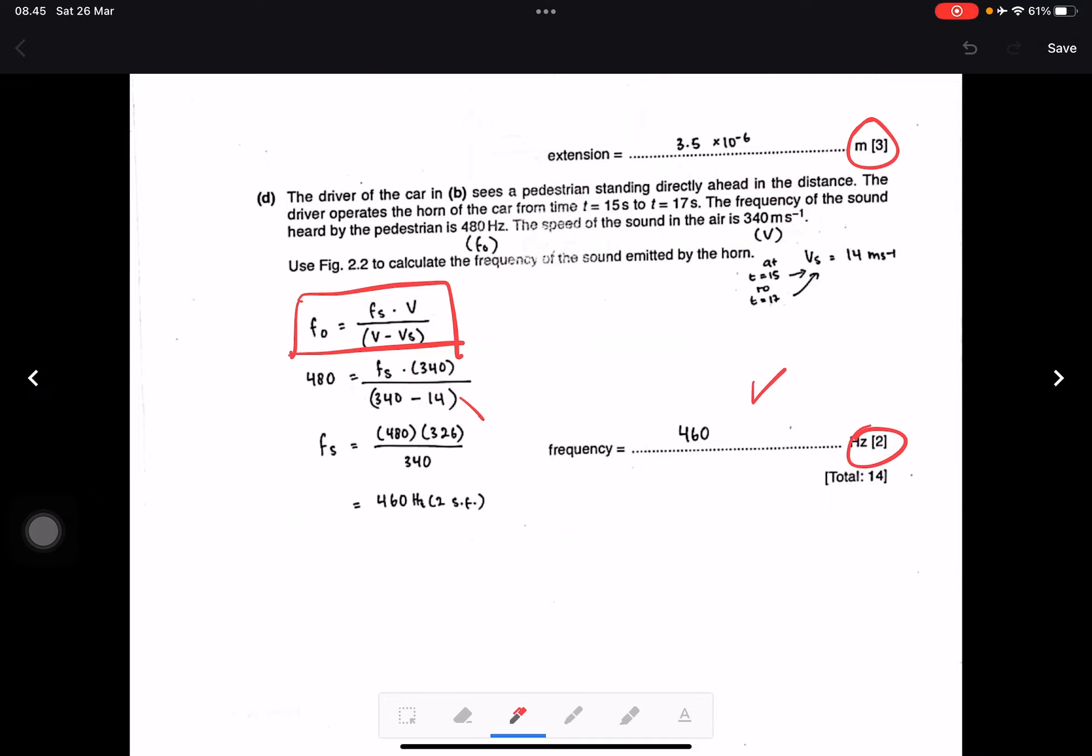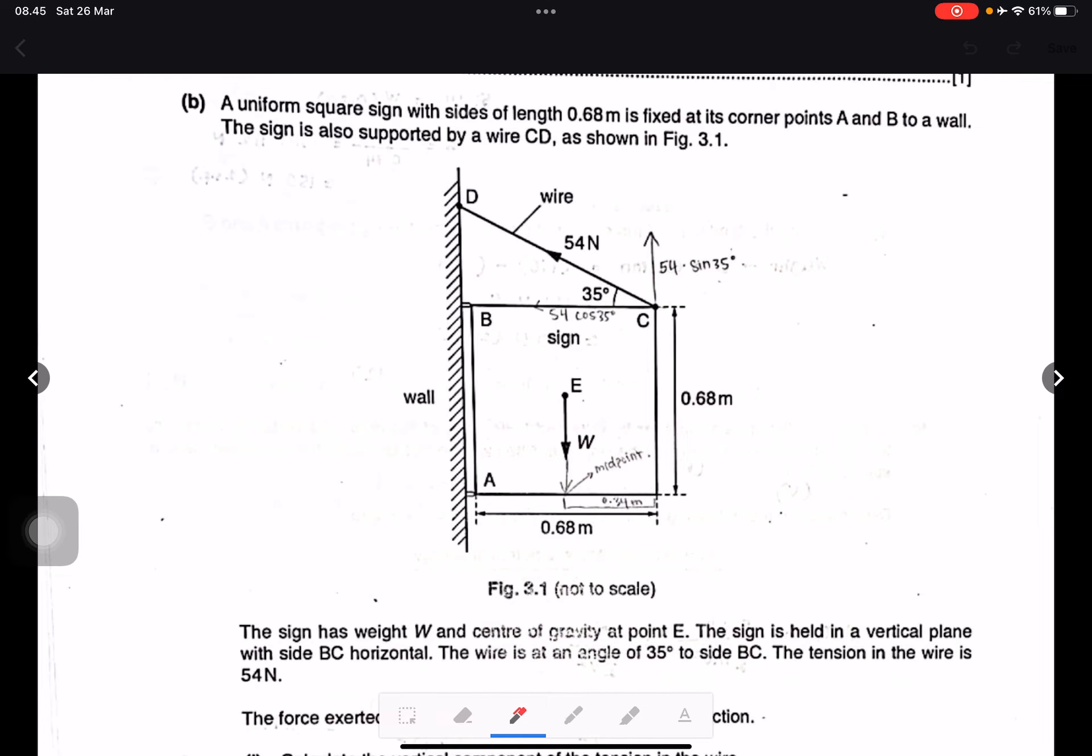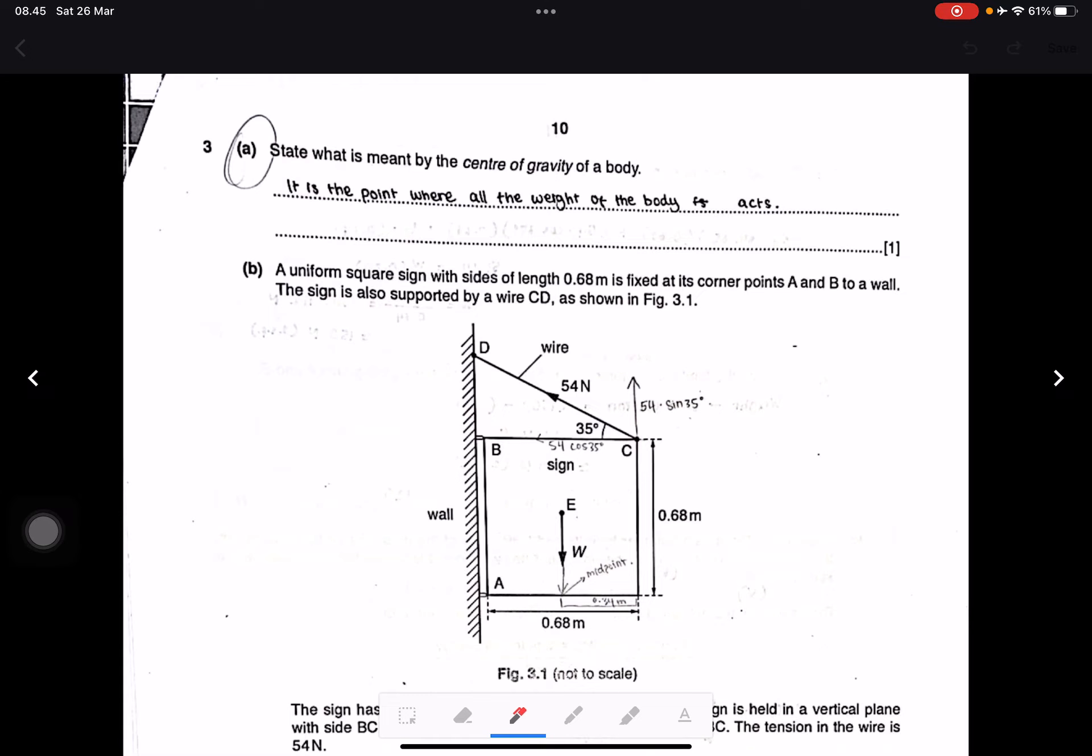f_observer is 480, and we find f_source, the frequency emitted by the horn. We use 14 from the graph. Why negative? Because the car is moving directly toward the pedestrian. Calculate this until we get 460 hertz. In two significant figures, this is correct. Let's check other questions. Still watching? Don't forget to subscribe. Push the red button.